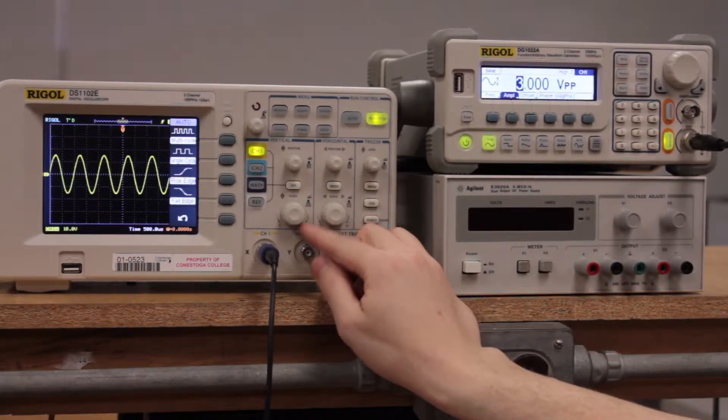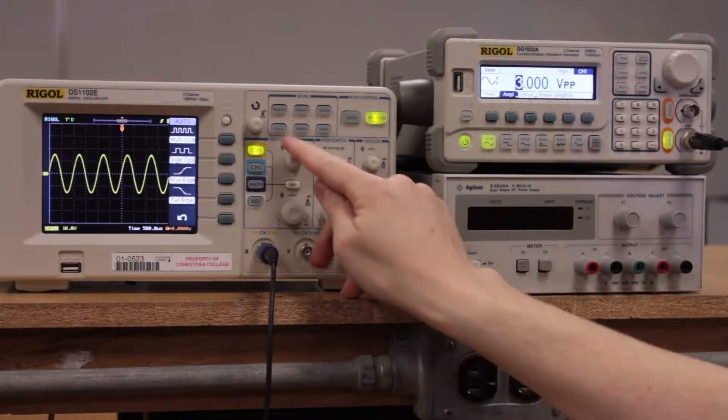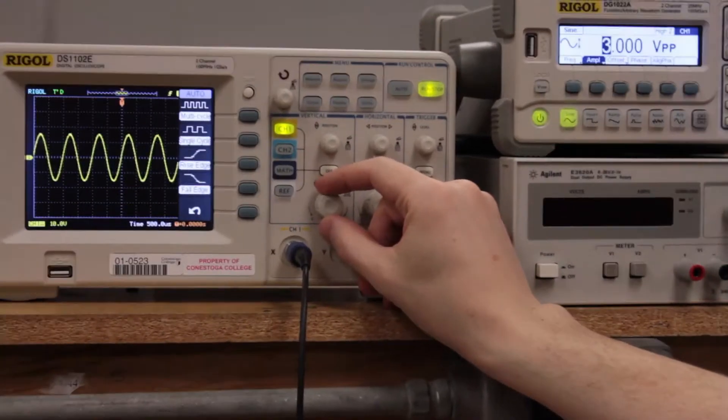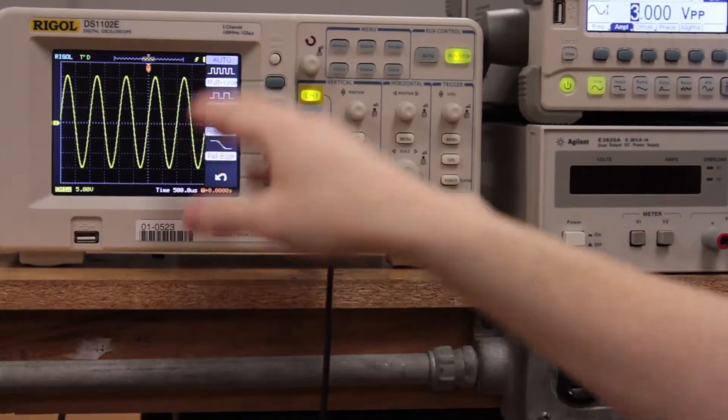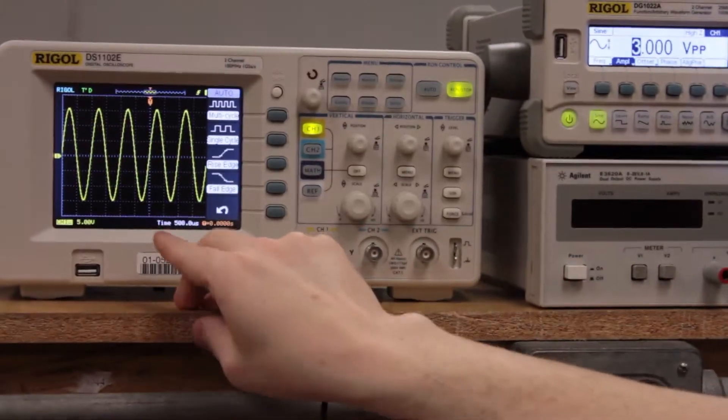To do that we're going to use the scale button here for vertical and we're going to turn it clockwise to get it to five volts per division.